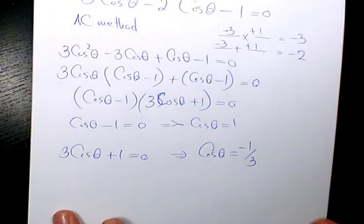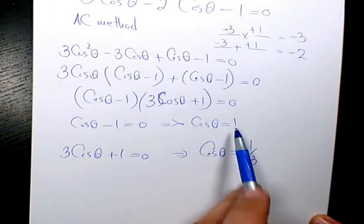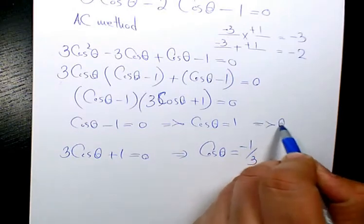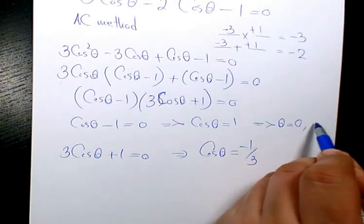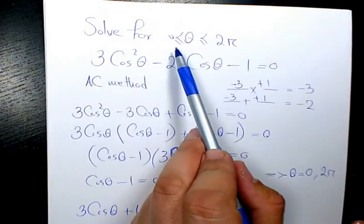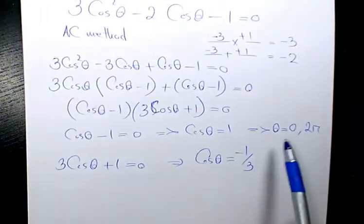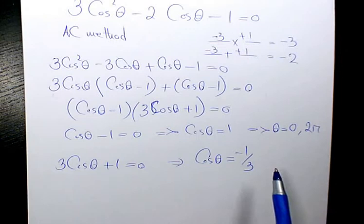Now, if you want to solve cosine theta equals 1, theta is going to be 0 and 2π. You're looking for between 0 and 2π. So cosine of 0 is 1, cosine of 2π is 1 as well.